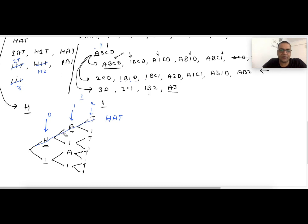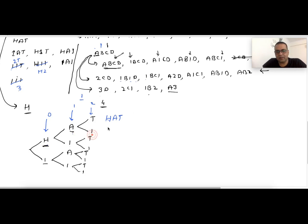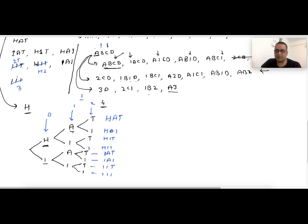At all indexes we take two decisions: one is to keep the character at that index as it is, and second is to replace the character with digit one. So this will print h1t, h11, 1at, 1a1, 11t, and 111. In the printing logic, when two digits are consecutive, instead of printing them as two separate digits, add them and print the sum.